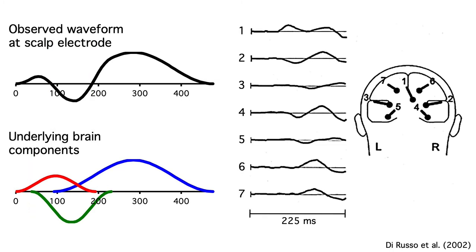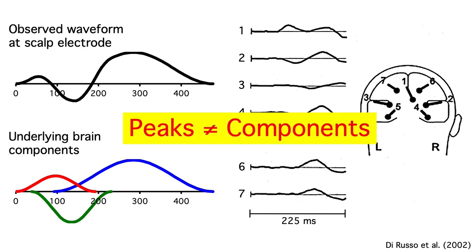For example, there are at least 10 distinct components active between 50 and 150 milliseconds in the sensory response to a visual stimulus. And there are clearly several different N2 components that come from different brain areas and reflect fundamentally different neural computations. So peaks and components are not the same thing.